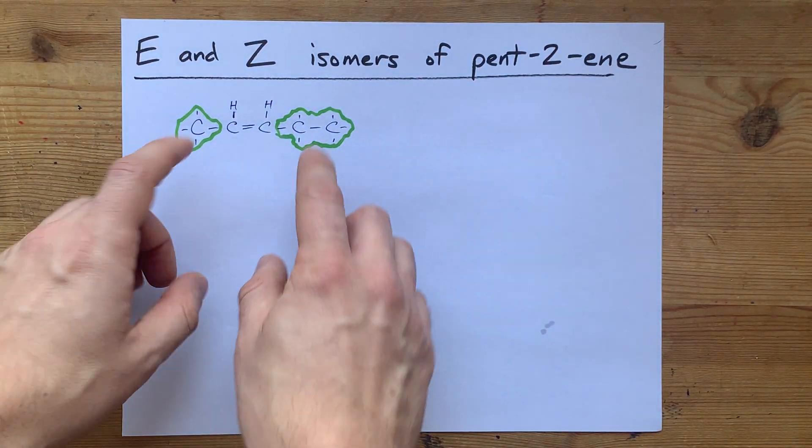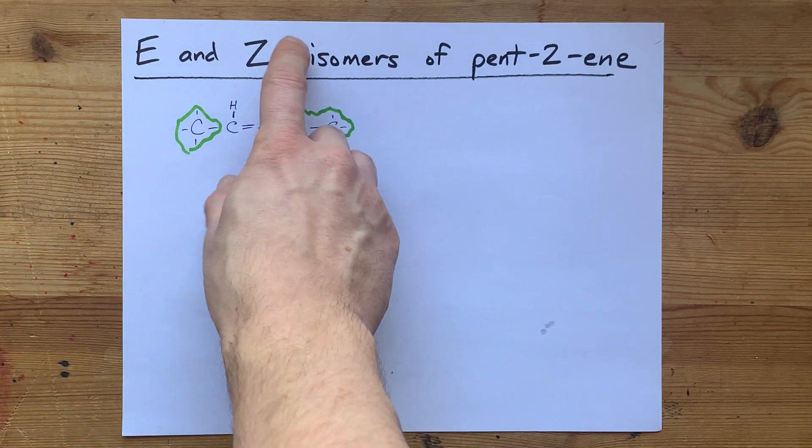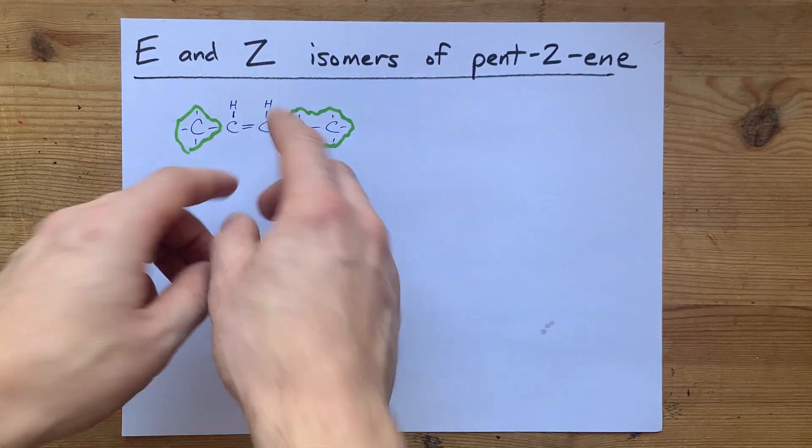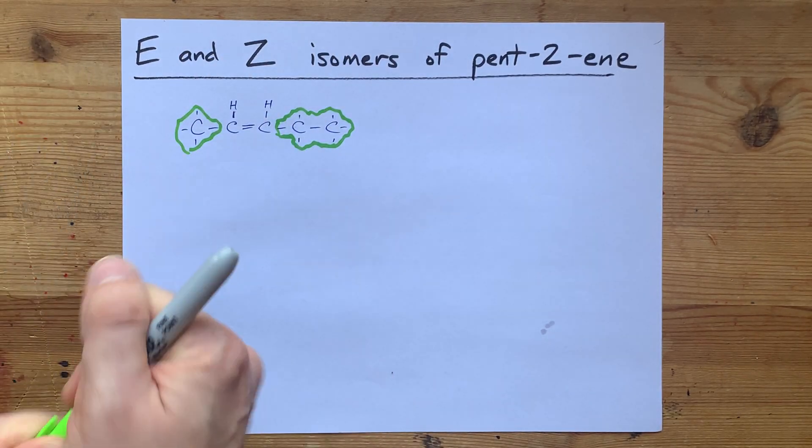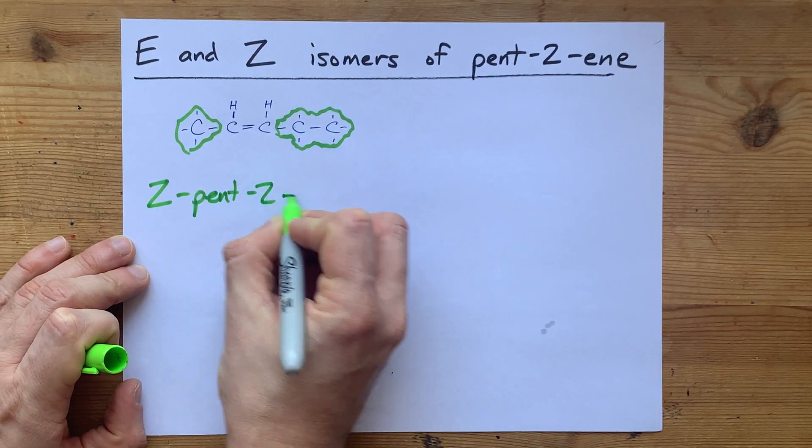And then, if the two higher priority groups are on the same side, it's Z. Now, here, that is the case. I also have the two lower priority groups on the same side. So what I've drawn here is Z-pent-2-ene.